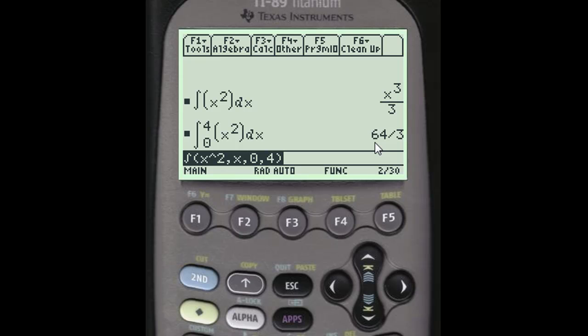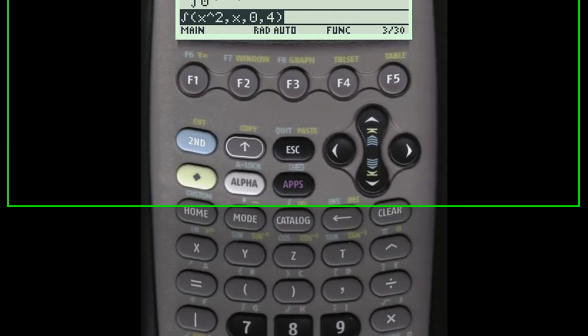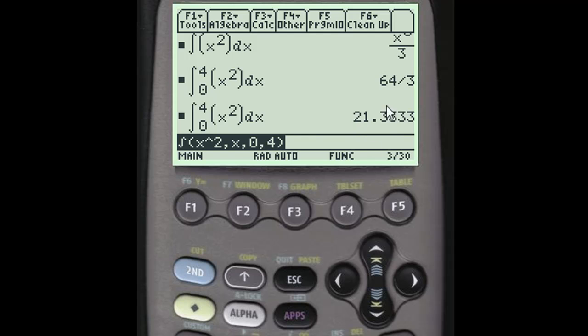And really that's it for the basics. One thing you might want to know, you may not know already, is you'll see down here you have auto, and what that means is when it computes answers for you, if it can give you an exact form it will, exact form meaning a fraction like this, otherwise it will give you a decimal approximation. If you want that decimal approximation right away, you can leave it on auto, just hit your diamond key and then enter and it will give you the decimal approximation.